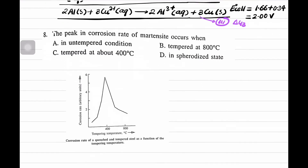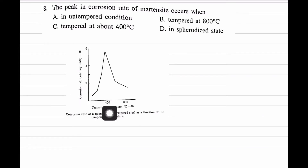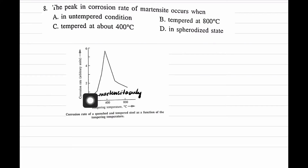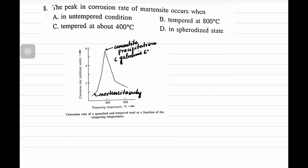Let's discuss question number 8: the peak in the corrosion rate of martensite occurs when? This is an important question. The graph is taken from Vragman's Physical Metallurgy, with corrosion rate on the y-axis and tempering temperature on the x-axis. At lower temperatures, martensite is the only phase and there is no galvanic couple, so corrosion rate is very low. As temperature increases, cementite precipitates, and at the peak, a very large number of cementite precipitates form, creating many galvanic cells that cause high corrosion.